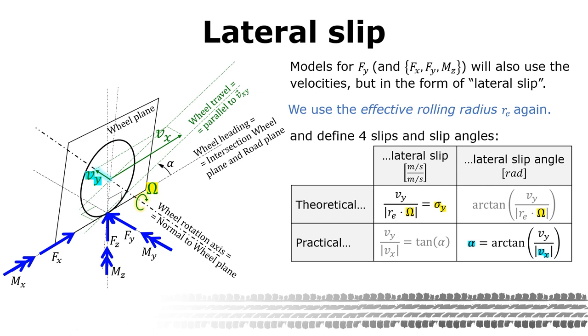So we get two columns, the velocity ratio and the angle. And we still have a split in two rows for the theoretical and practical. In total we have four definitions. As for the longitudinal we will use the theoretical slip later in the course.